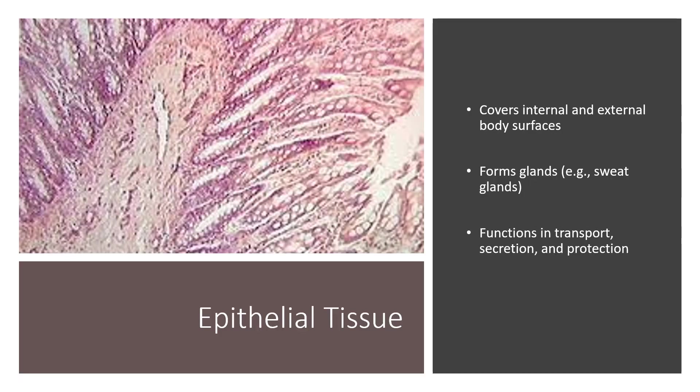We're going to begin with epithelial tissue. Epithelial tissue covers a majority of the body, both internal and external body surfaces. Epithelial tissue is also found in glands, such as your sweat glands, and it functions primarily in transport, secretion, and protection.